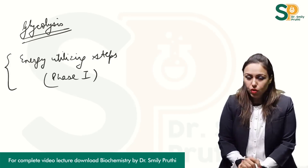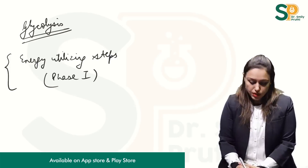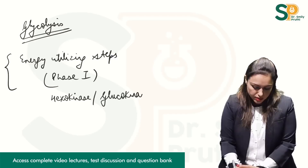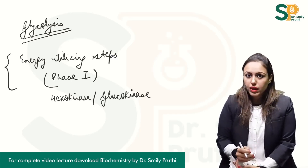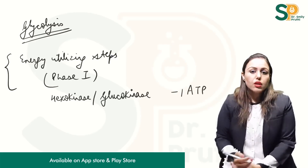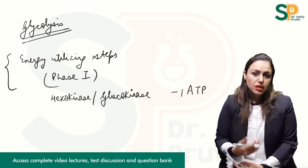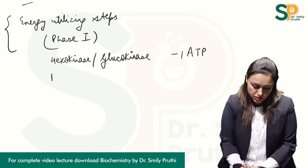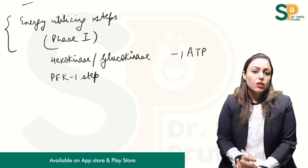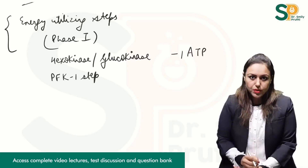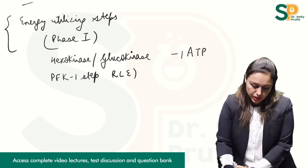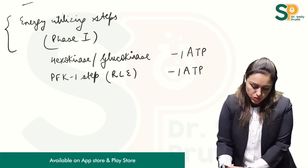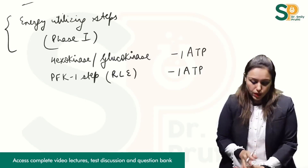In phase one of glycolysis, one step is the first step catalyzed by enzyme hexokinase or glucokinase, which is using one ATP. So I will subtract this one ATP in the energetics of glycolysis. There is one more step in phase one — the PFK-1 step. The full form is phosphofructokinase-1, which is also the rate limiting enzyme of glycolysis, and this enzyme is also using one ATP, so again minus one ATP.